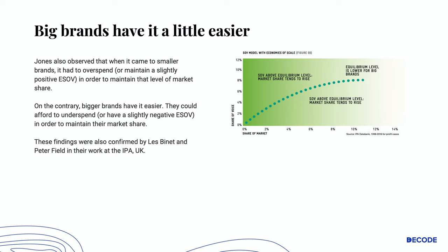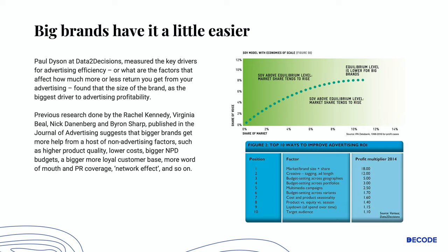Paul Dyson at Data2Decisions measured the key drivers for advertising efficiency — what factors affect how much or how little return you get from your advertising — and found the size of the brand to be the biggest driver of advertising profitability. Also, research done by Rachel Kennedy, Virginia Beale, Nick Dannenberg, and Byron Sharp published in the Journal of Advertising suggests that bigger brands get much more help from a host of non-advertising factors such as higher product quality, lower cost, bigger NPD budgets, a bigger and more loyal customer base, more word of mouth and PR coverage, network effect, and so on. That is why big brands have it a lot easier compared to smaller brands when trying to grow.